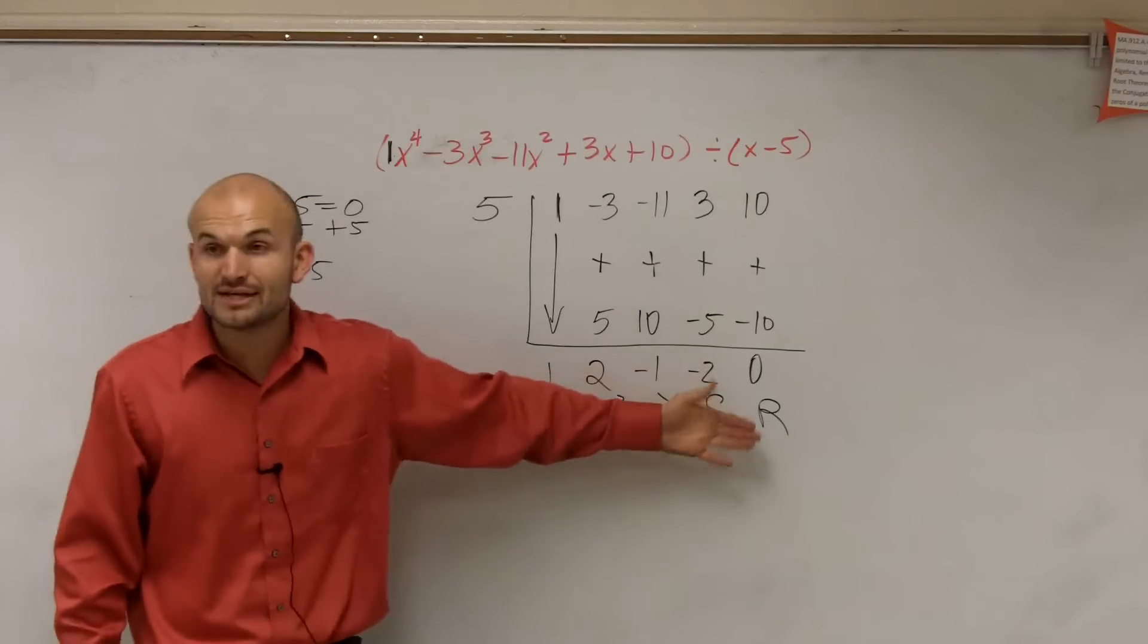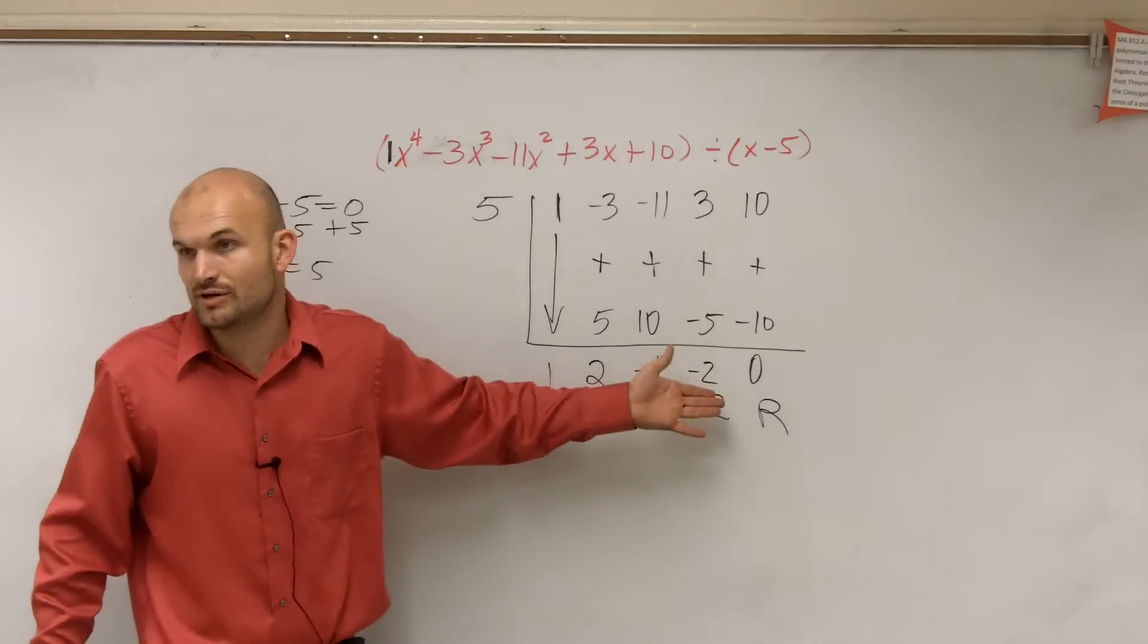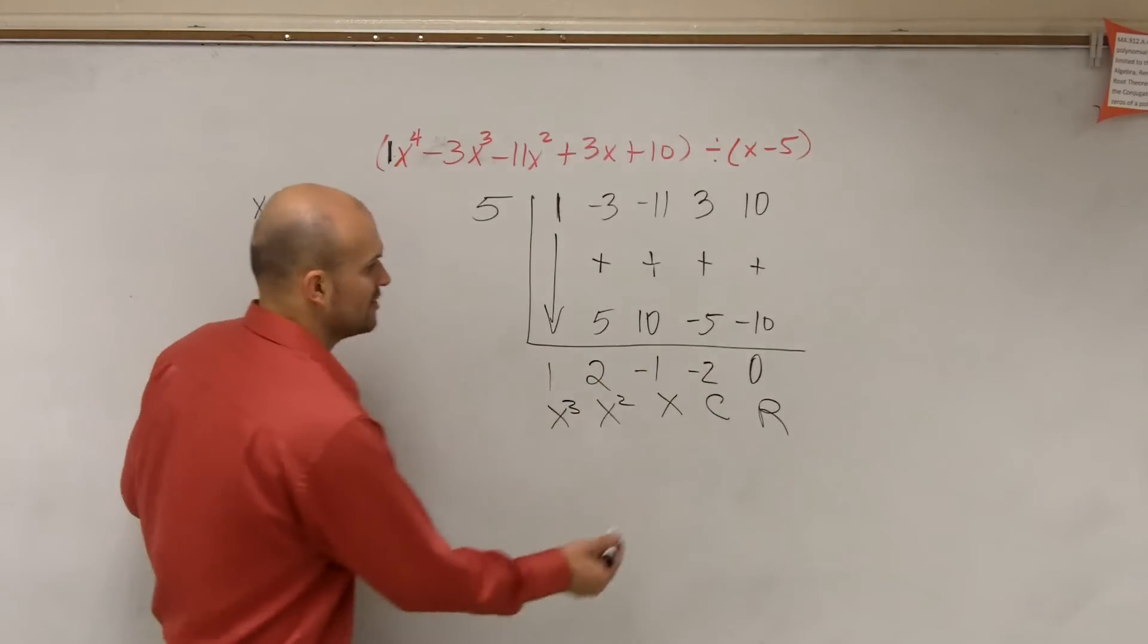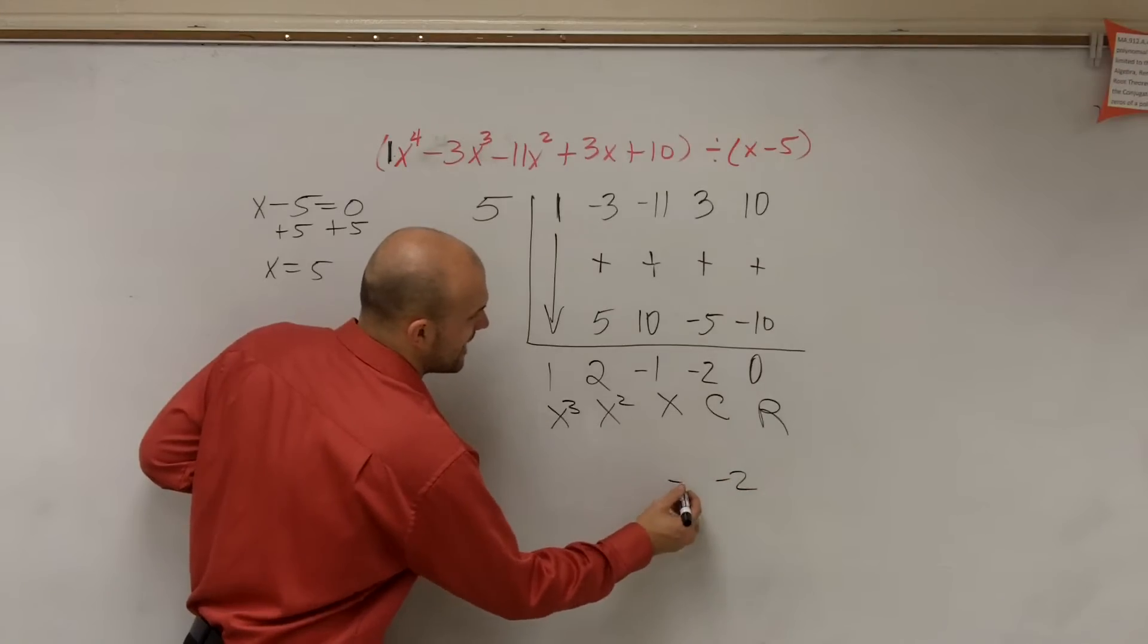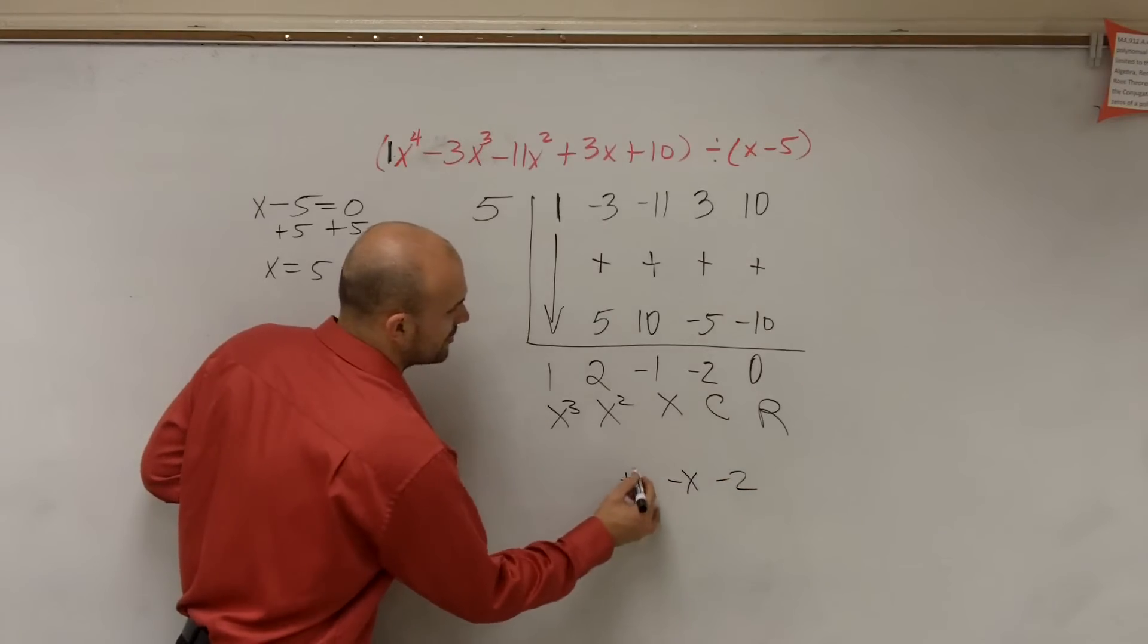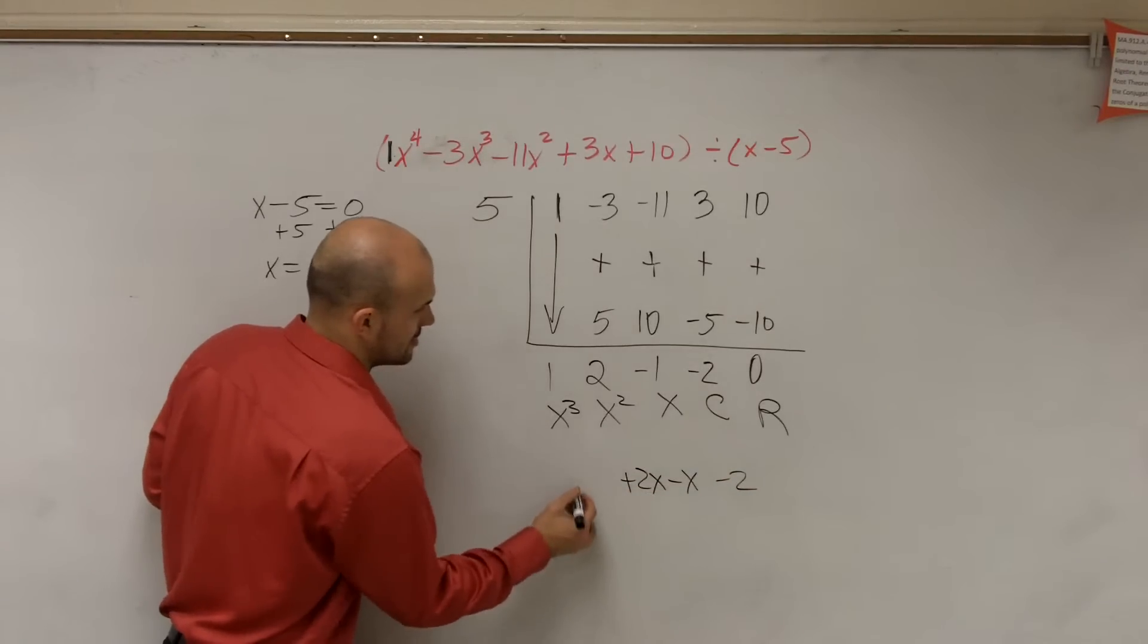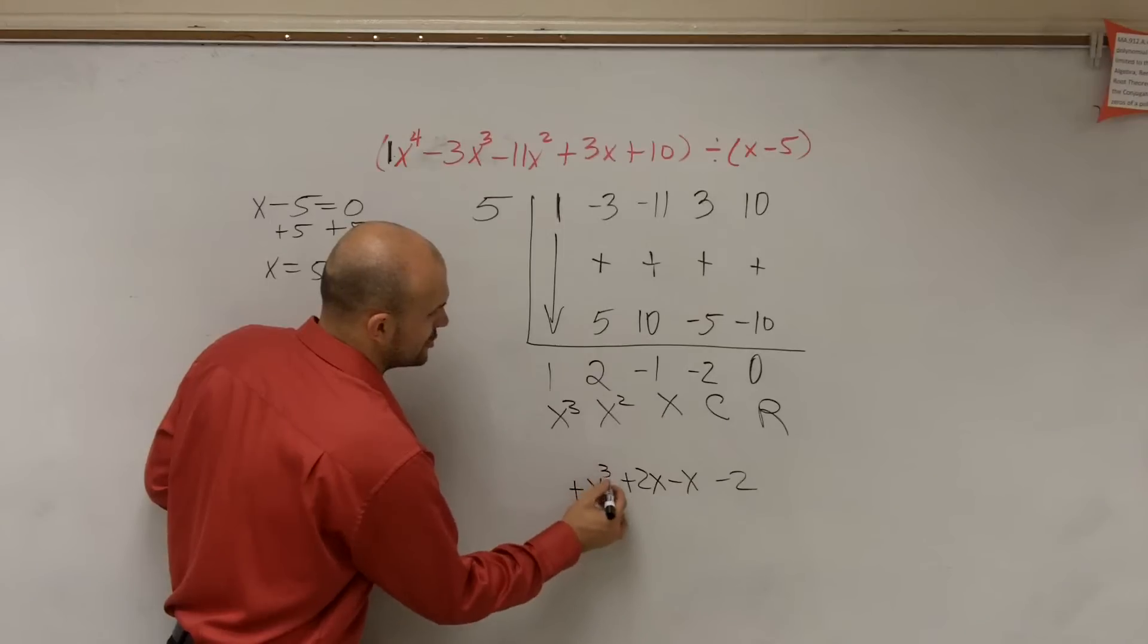So remember the remainder is if there's a remainder at all, and then you have your constant. So the way we write this would be negative 2 minus x plus 2x plus x cubed.